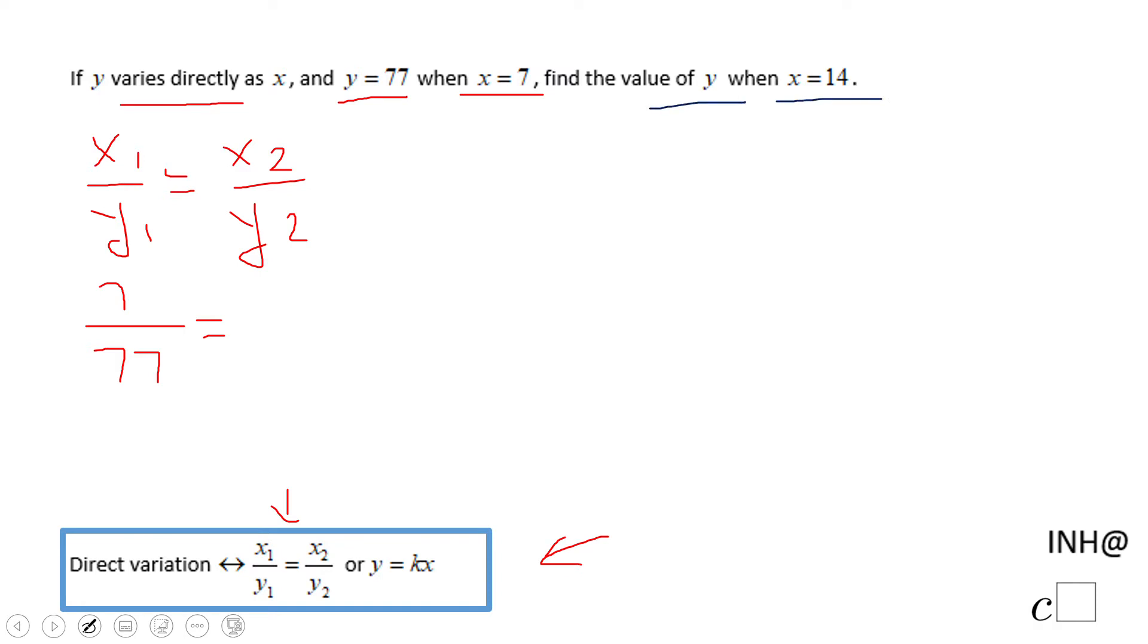So 14 is x sub 2 and y2 is the value we need to find out. And here we can do cross multiplication and we have 7y2 equals 77 times 14.